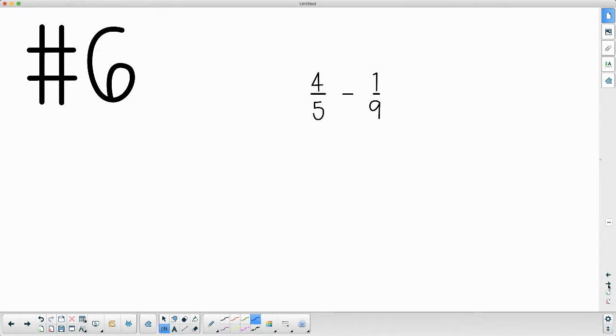Number six asks us to add these. I didn't change that to an add sign, I'll do that right now. So we need common denominators. 9 times 5 is 45. Then I can see that 5 times 1 is 5.